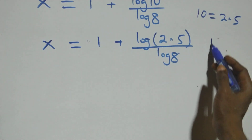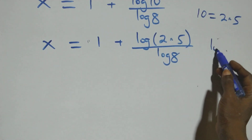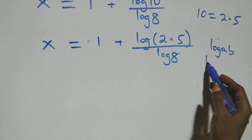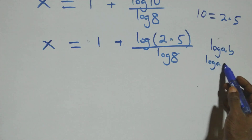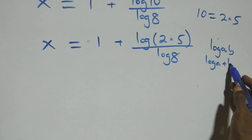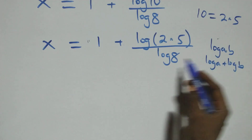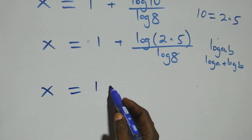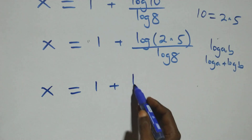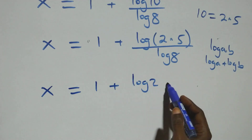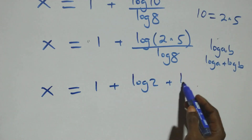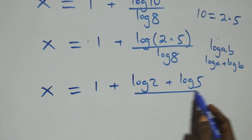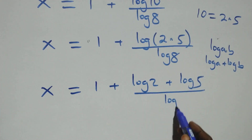This again follows the logarithm product rule — log A times B is the same as log A plus log B. So what we have here becomes X equals to 1 plus log 2 plus log 5, all over log 8.